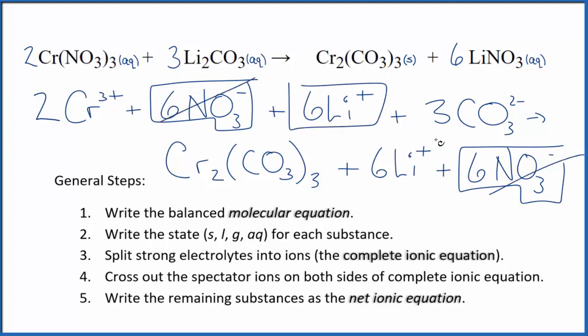Six lithium ions in the reactants and again in the products, spectator ions. Cross them out. Now, what's left? That's the net ionic equation for Cr(NO3)3 plus Li2CO3. I'll clean it up, write the states, and we'll have our net ionic equation.